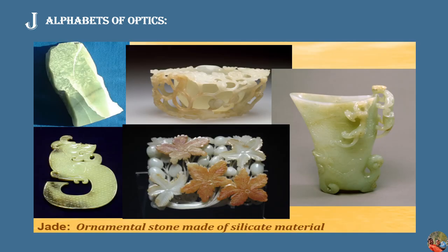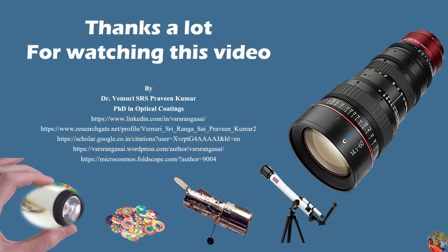Next, the letter is J. J for Joker — everyone knows — but here in optics, J means jade. Jade is an ornamental material which everyone uses in ring fashion or locket fashion on their body. It is a stone made up of silicate and it looks mostly green in color. Kindly watch the upcoming sections covering each and every alphabet of optics.